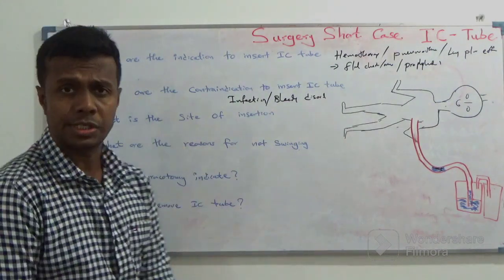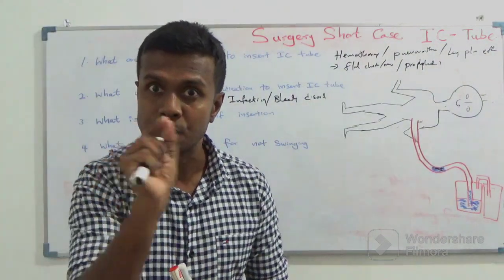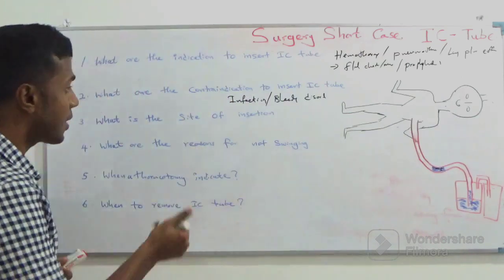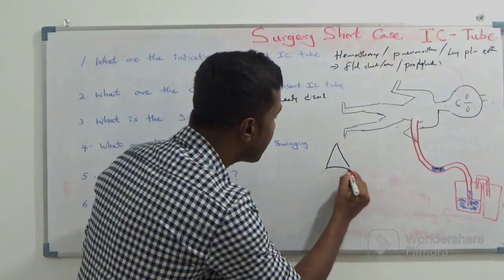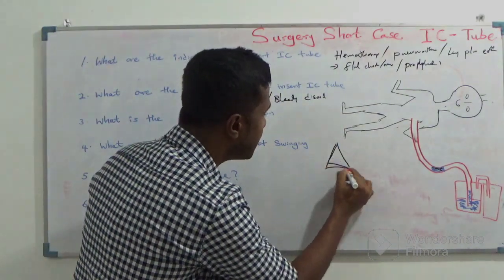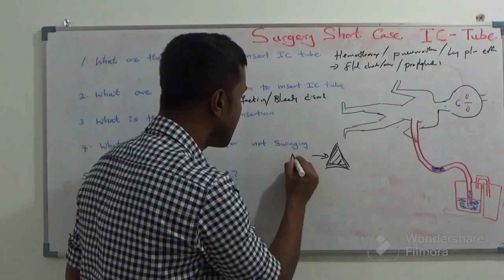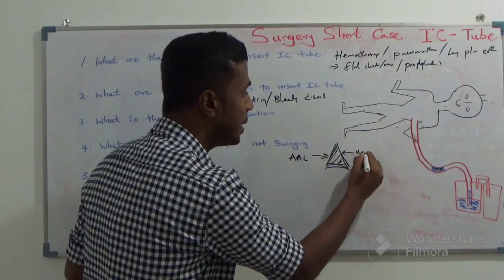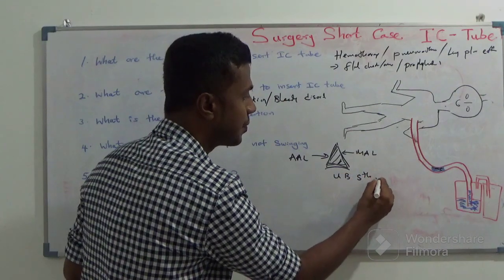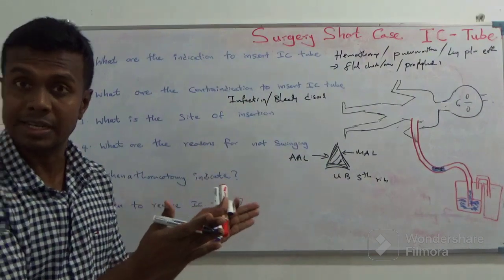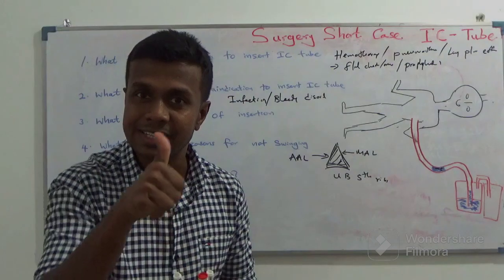What is the site of insertion? We are going to insert the IC tube at the safe triangle — the anterior axillary line, mid-axillary line, and upper border of the fifth rib. This area looks like a triangle, and that triangle is called the safe triangle.